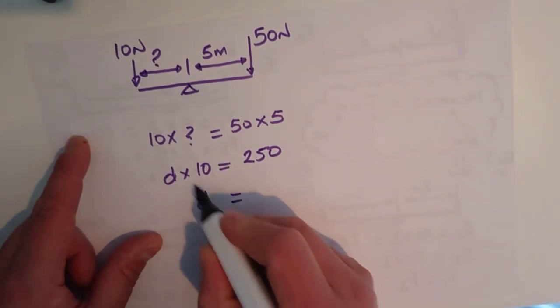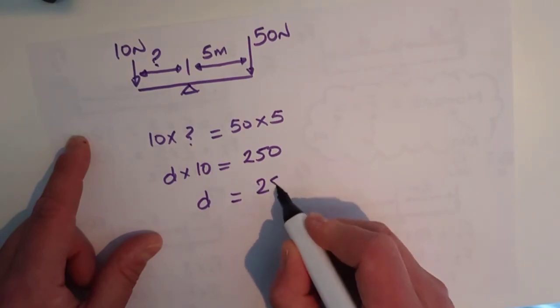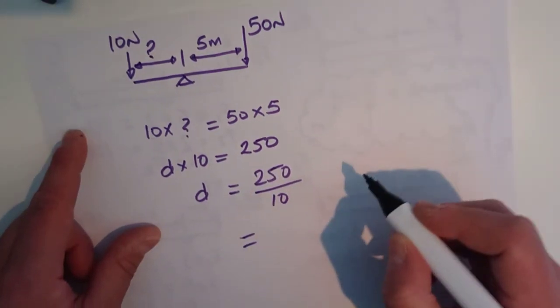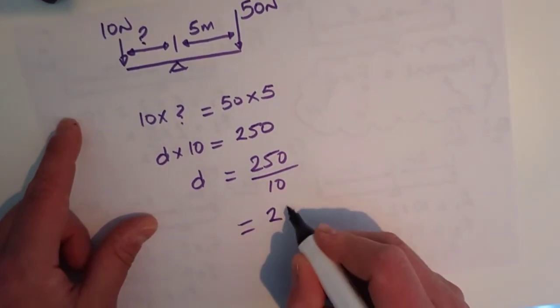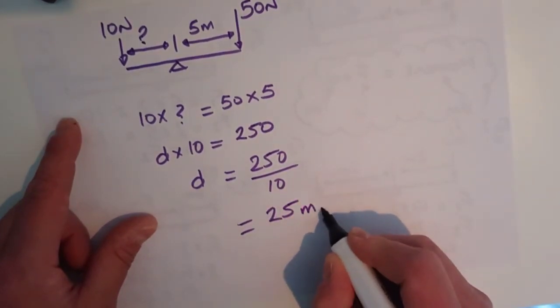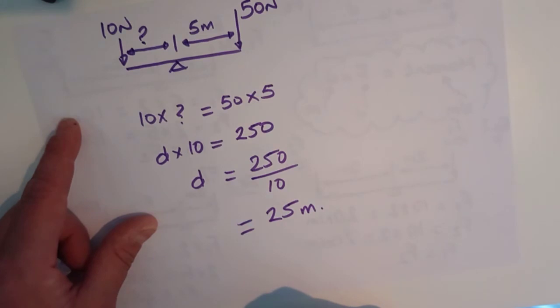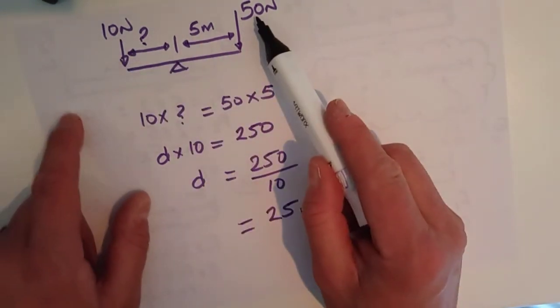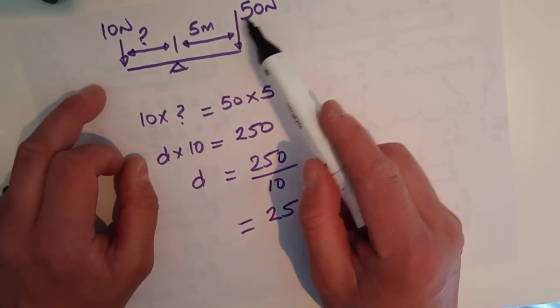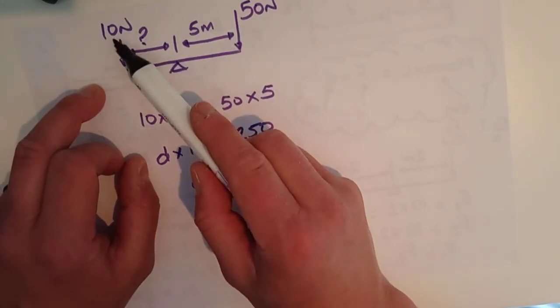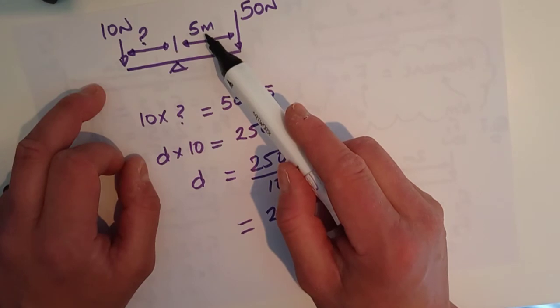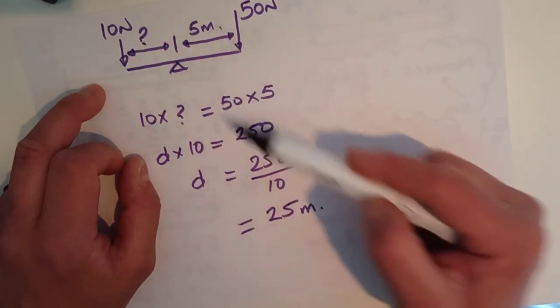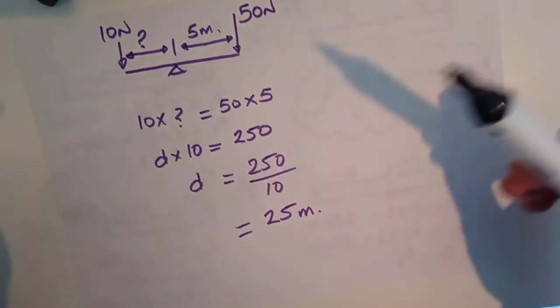So distance, we'll bring this 10 across, 250 divided by 10 is equal to 25 meters. And that makes sense, isn't it? Because this force is 5 times bigger than this force. So it makes sense that this distance here is going to be 5 times this distance, which it is to balance it out.